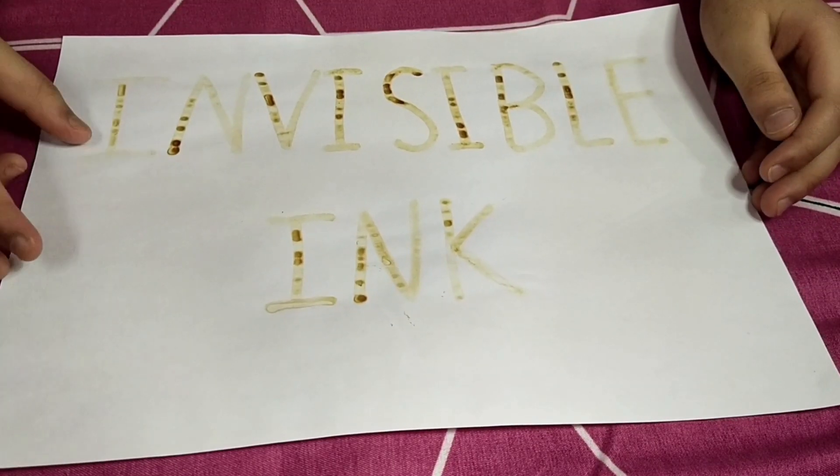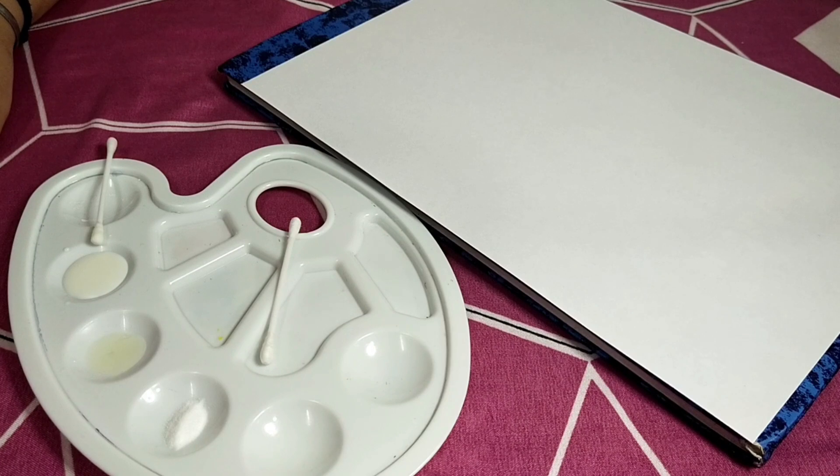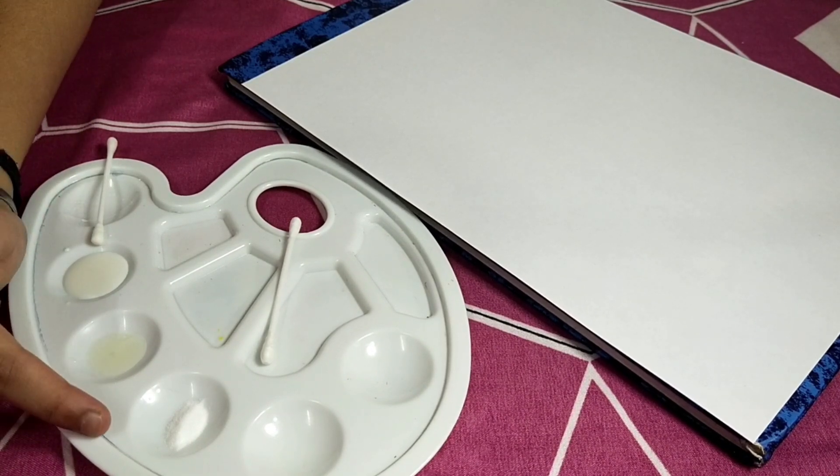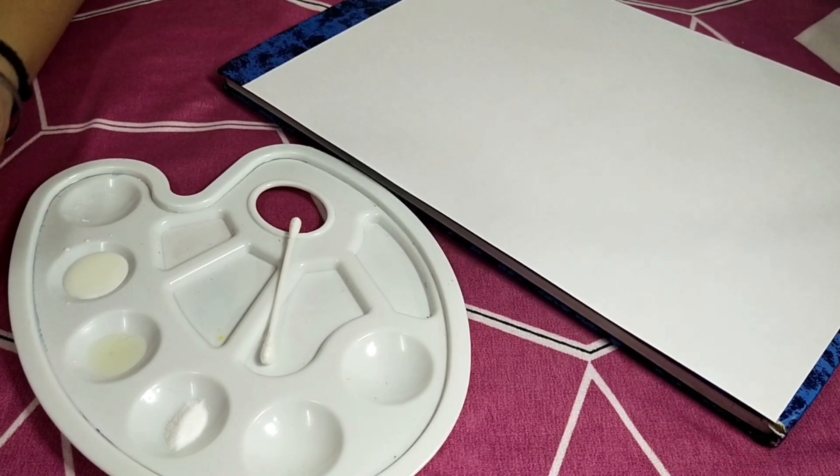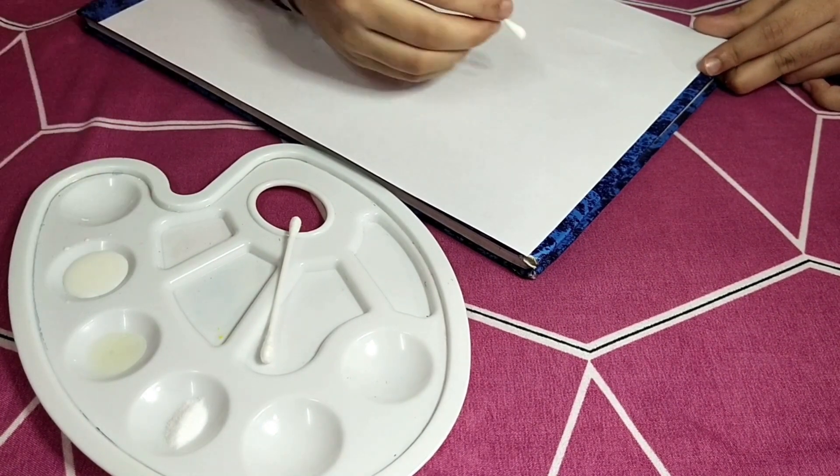We can make invisible ink with milk, lemon, or baking soda. First, let's try with milk.